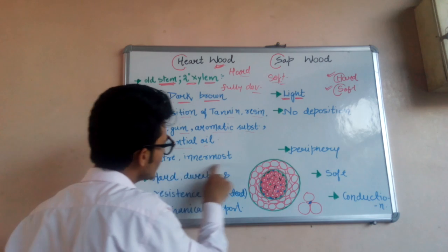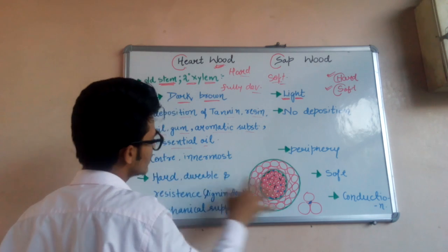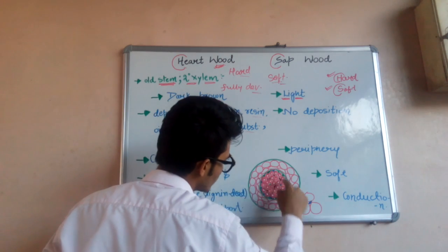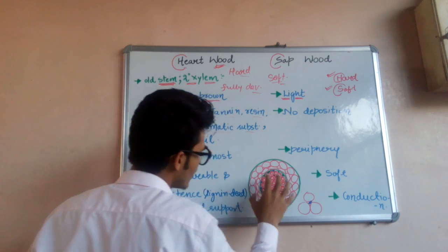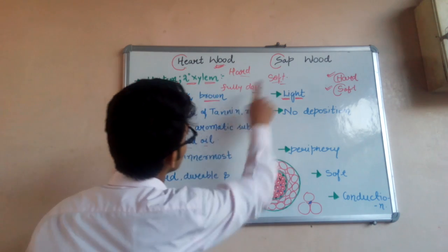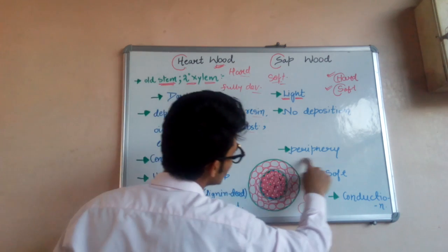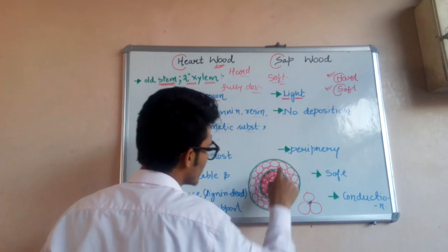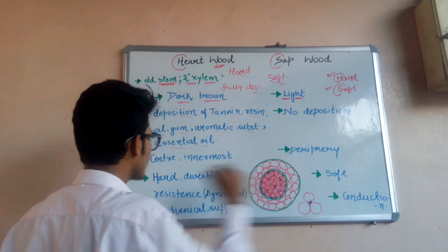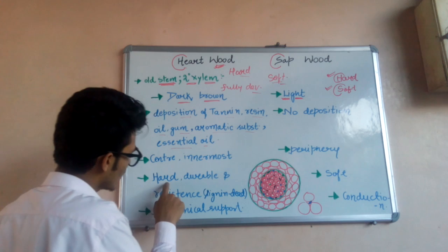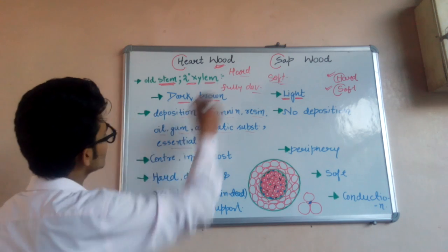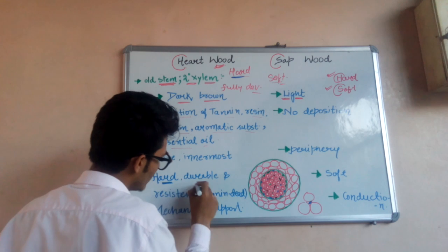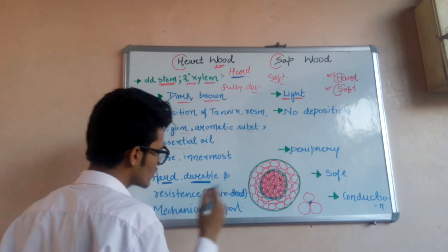Hardwood is present in the center, which is the innermost region, and sapwood is present on the peripheral region or periphery. As we can see in this diagram, hardwood is present in the center and sapwood surrounds it toward the outside.